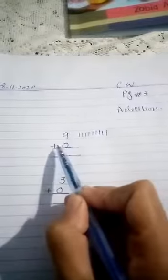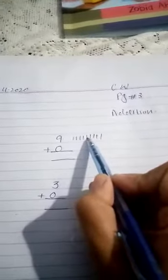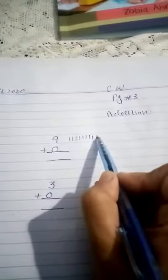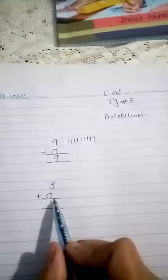Okay students, in nine we have to add zero. Zero has no value, so we draw nine lines on copy: one, two, three, four, five, six, seven, eight, nine. The answer is nine. Next question: three. We have to add zero to it. Zero has no value, so we draw three lines: one, two, and three.